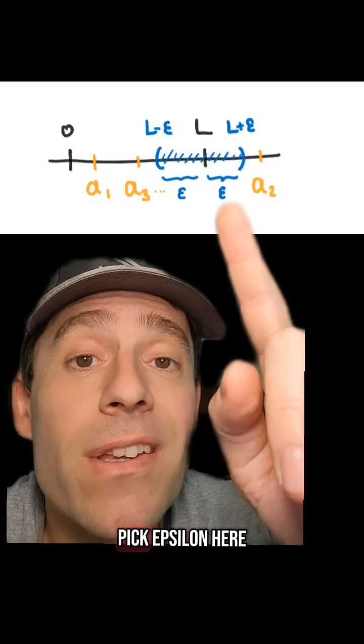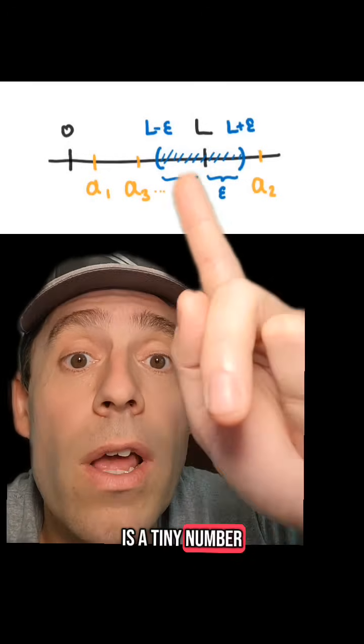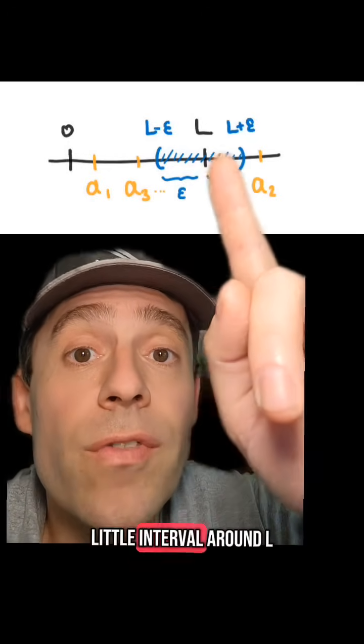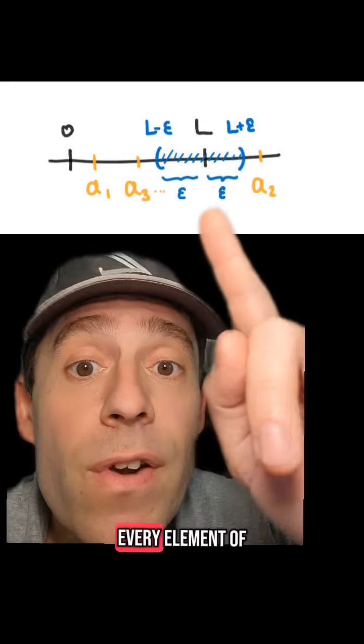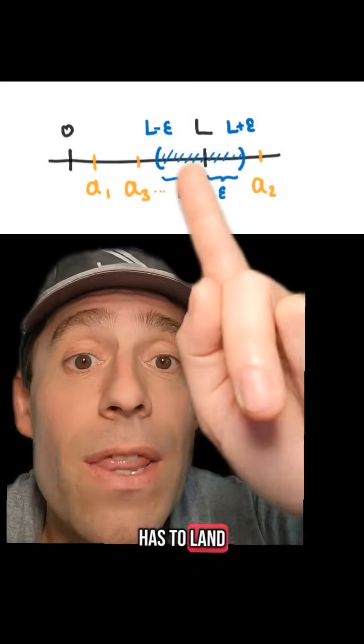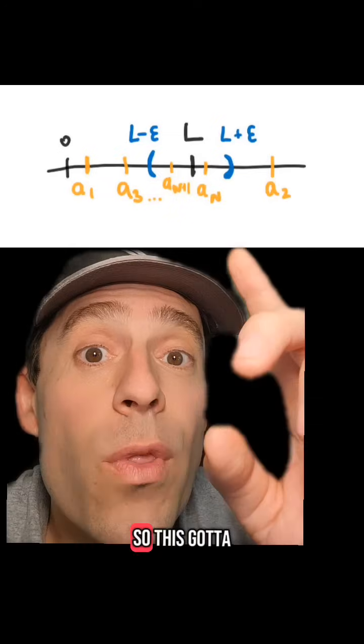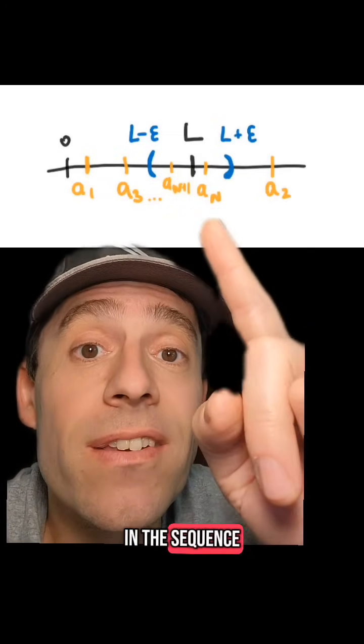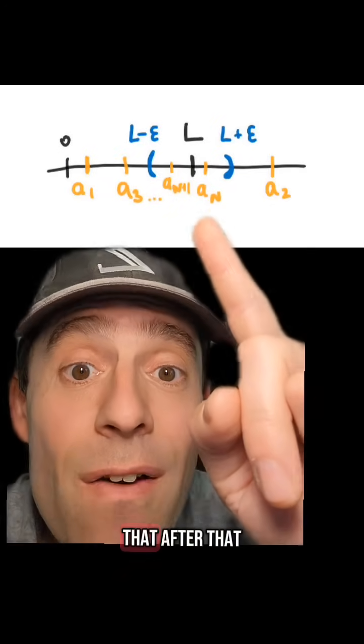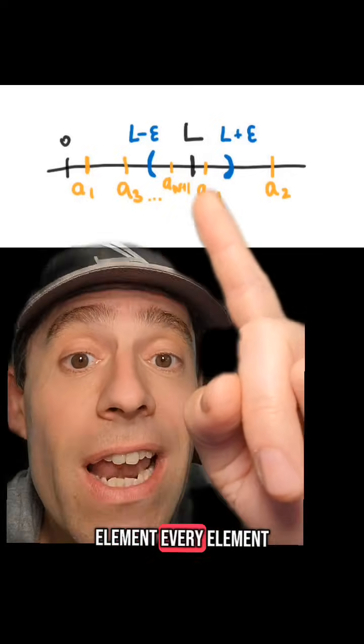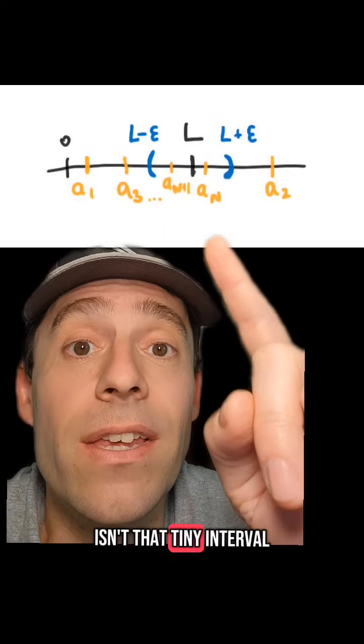So pick epsilon—here is a tiny number—and then there is just a little interval around L. If the limit is L, then every element of the sequence at some point has to land in this tiny interval. So there's got to be some element in the sequence, let's call it a_N with capital N here, that after that element, every element in the sequence is in that tiny interval.